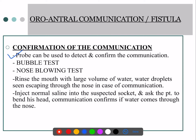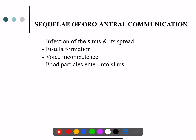There are a few tests to confirm oro-antral communication: a probe can be used to detect and confirm it, you can use a bubble test, or you can use a nose-blowing test. The sequelae of this communication — due to sinus and fistula formation — include voice incompetency, food particles entering the sinus, purulent discharge, and halitosis.